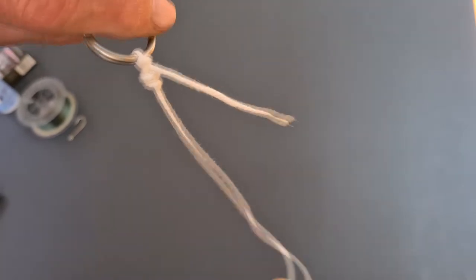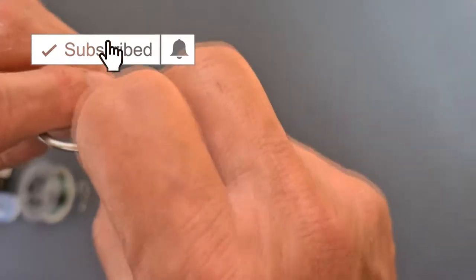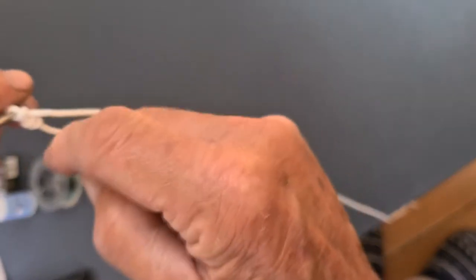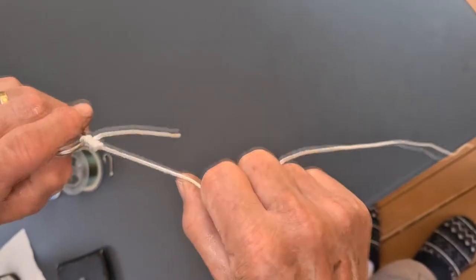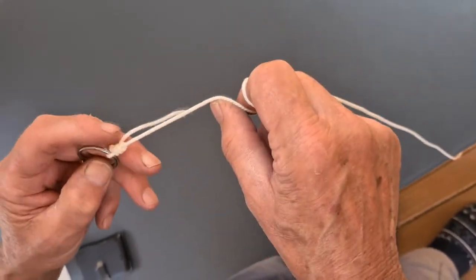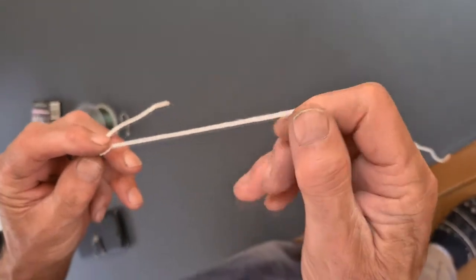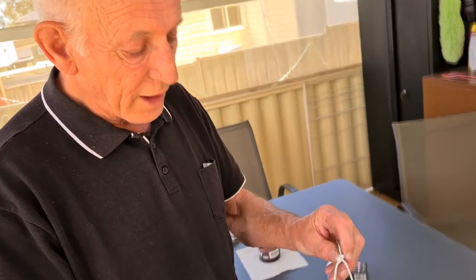So there's nothing there that's gonna cut each other, this is not gonna pull out because it went through the loop twice. But we did find with some real slippery, waxy fishing line, even that pulled through, so what we found...